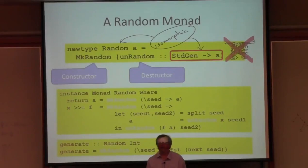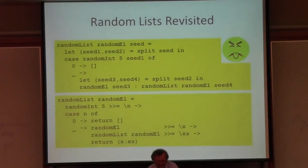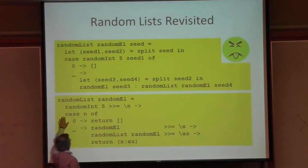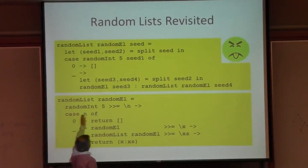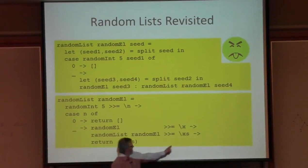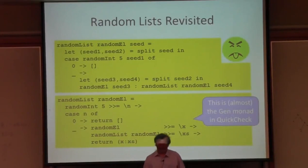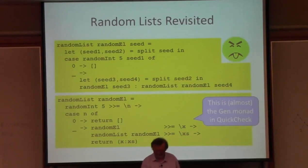Coming back to the random list generator, instead of starting by splitting the seed, I just start by generating my random number in range zero to four - bind that, call it n. If it's zero, return the empty list. Otherwise generate an element, call it x, generate the rest of the list recursively, call it xs, then return x cons xs. That's nice. This monad is essentially the same as the generation monad used in QuickCheck - the testing tool I've been spending most of my time on recently. The monad in QuickCheck works in exactly the same way, it just handles a little bit more.